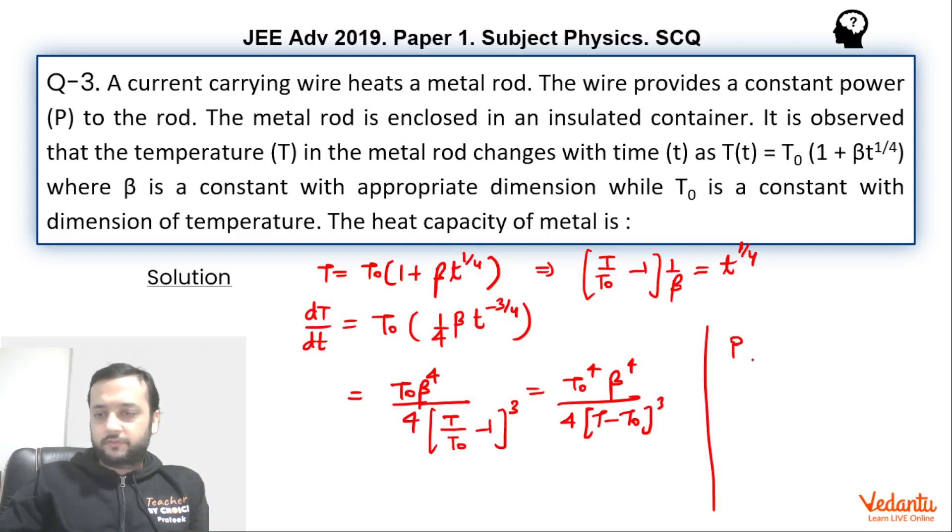We can say that the rate of transfer of heat can be written as heat capacity into rate of change of temperature. dQ by dt is nothing but C into dT by dt. So from here we can say that C value will be power upon dT by dt.